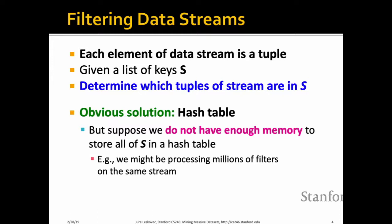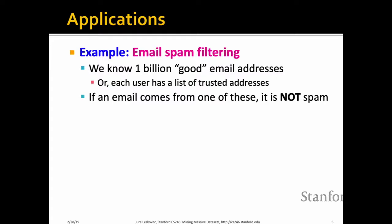Here's a realistic example: a spam filter. Imagine each of us has a set of trusted email addresses — say one billion trusted addresses. When an email comes in, we quickly want to check if it's from one of these addresses. If I'm Gmail and a new email comes in, I need to load your set of trusted addresses and compare. I obviously cannot maintain a hash table of thousands of email addresses for every user — it's just too much.